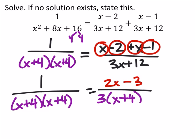Well, that's great because when I find common denominators on this, on the right, I just need another x plus 4. So, I'm going to have to multiply 2x minus 3 times x plus 4 as well.